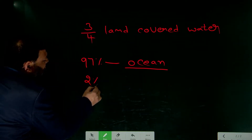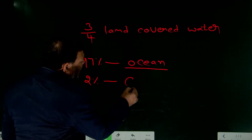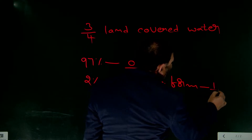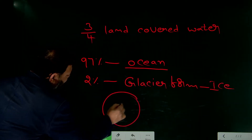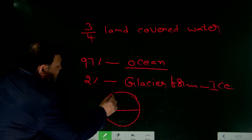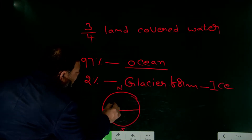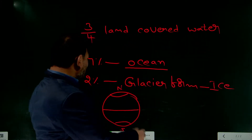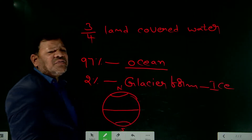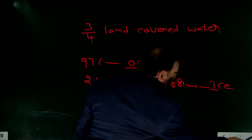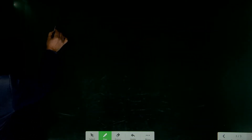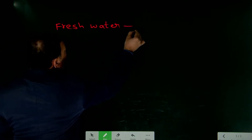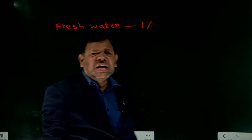2% of the water is present in glacier form — that is, in the form of ice at the North Pole and South Pole regions, as seen on a globe. This water is also not useful to us. Only 1% is fresh water.